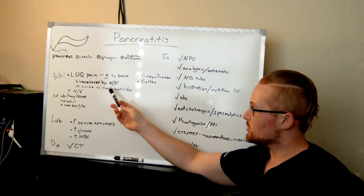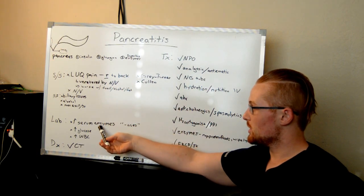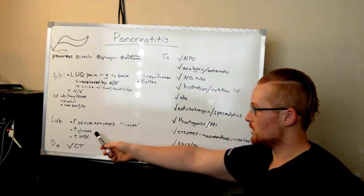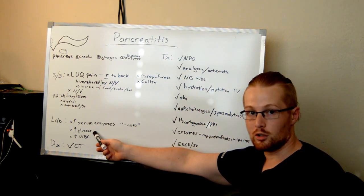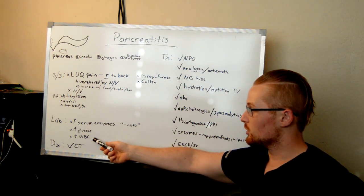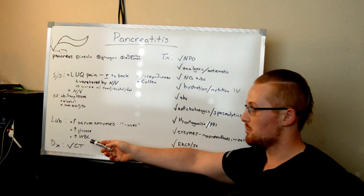So let's talk about some labs. You'll see increased serum enzymes. The pancreas enzymes are going to be up: lipase and amylase are going to be elevated. You might see also elevated glucose levels because it's not able to produce insulin like normal to lower those. And you may see increased white blood cell count, which is because it's inflamed and maybe infected.